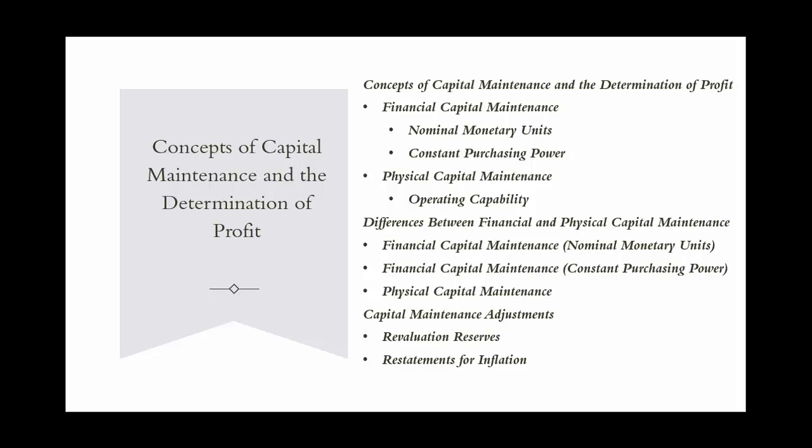The constant purchasing power approach adjusts the monetary value to account for changes in purchasing power due to inflation, ensuring capital maintains its real value over time. For example, ABC Corporation starts the year with $2 million in net assets, earns $600,000 in profits, but inflation is 10%. To maintain purchasing power, the company needs $2,200,000 — 10% more than $2 million — at the end of the year. If ABC Corporation ends the year with $2,400,000 in net assets, it has maintained its financial capital in constant purchasing power terms and earned a profit of $200,000 ($2,400,000 minus $2,200,000).